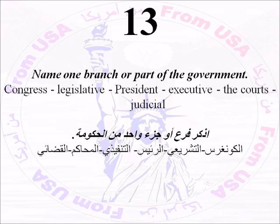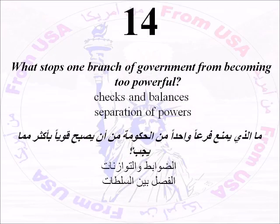American Government Part B: System of Government. Number Thirteen: Name one branch or part of the government. Congress, the legislative branch; the president, or the executive branch; the courts, or the judicial branch. Number Fourteen: What stops one branch of government from becoming too powerful? There is a system of checks and balances and a separation of powers.